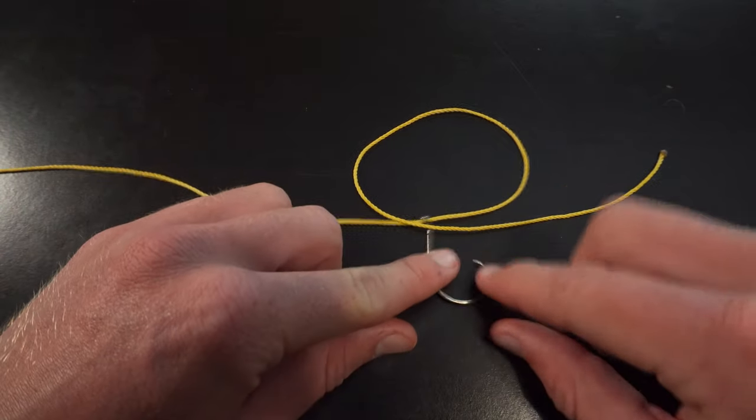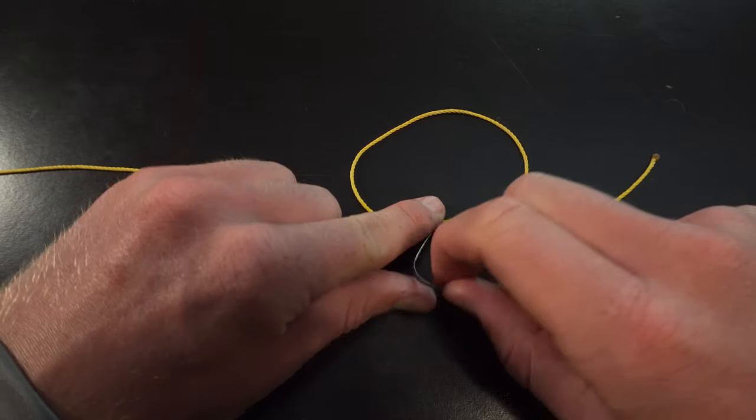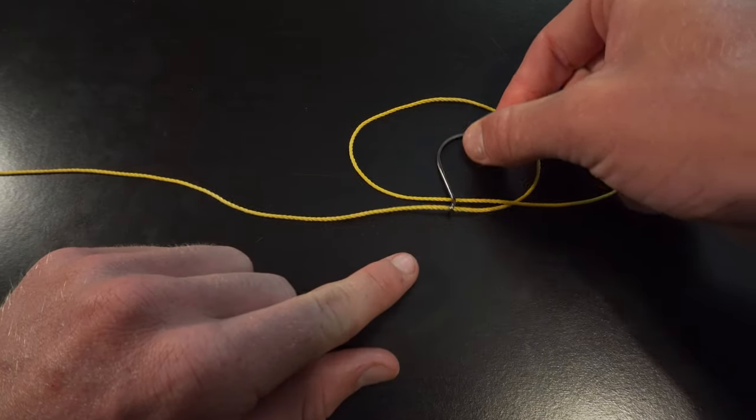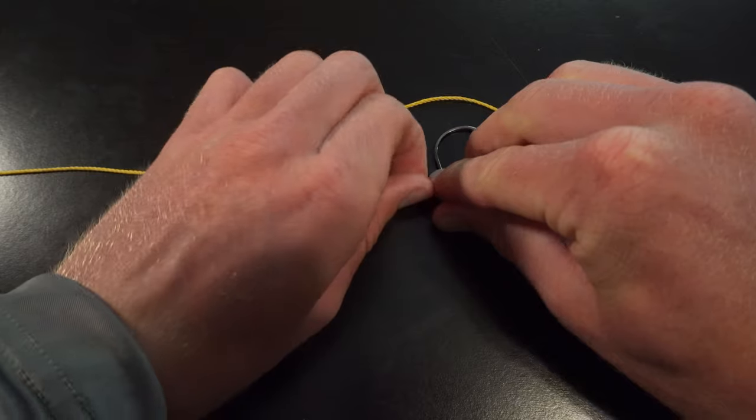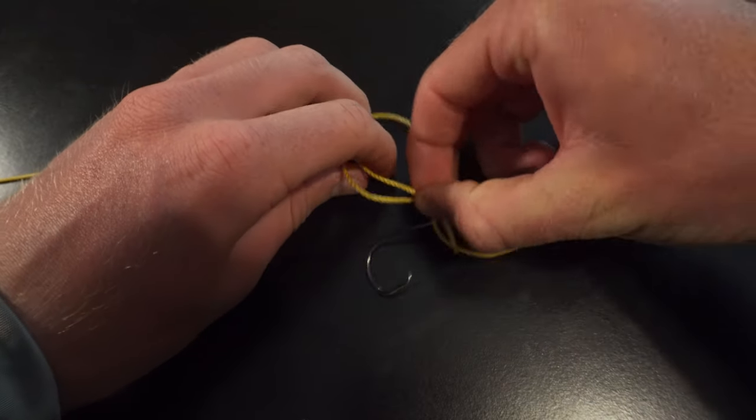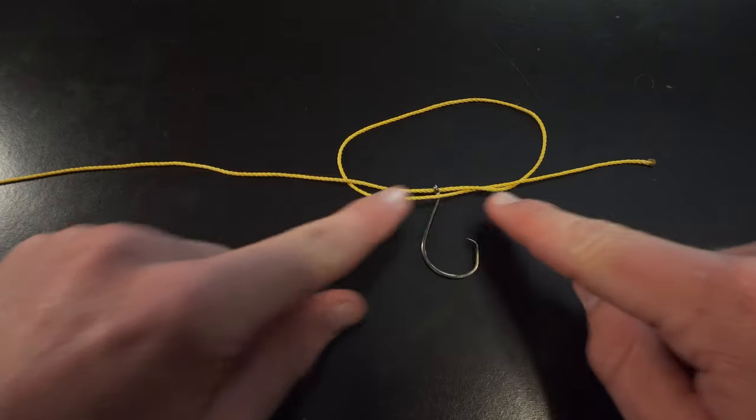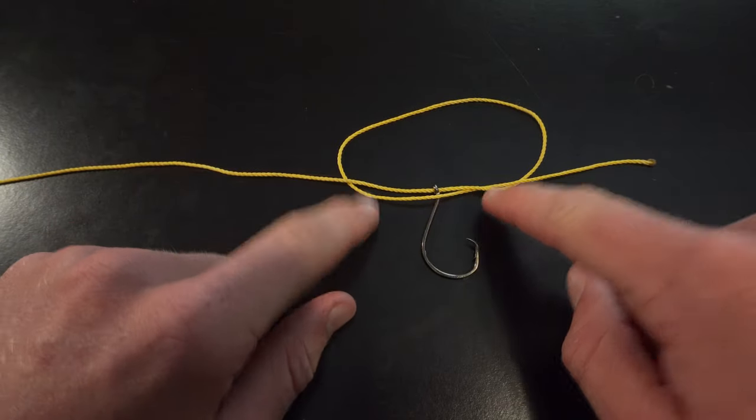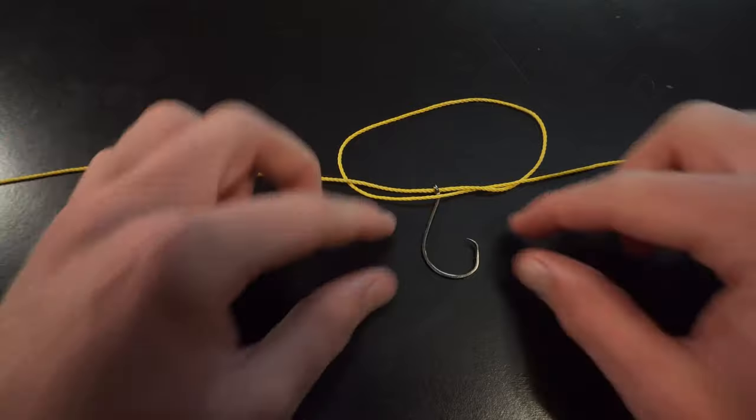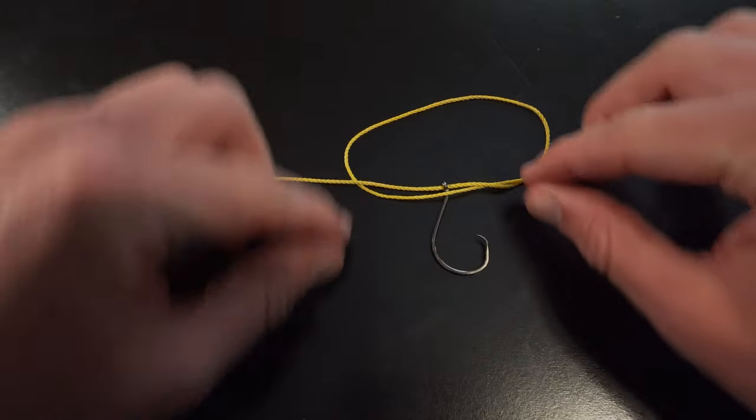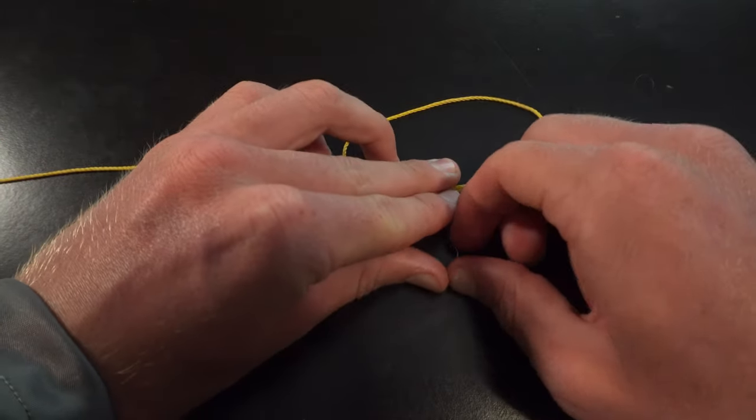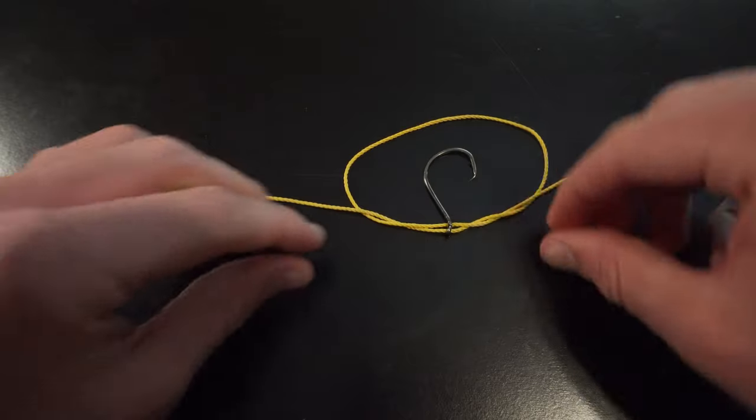Then we're going to take the actual hook and we're going to put it in the line and we're going to put it out the other way. So if you noticed it kind of looped that line a little bit. Well all you're going to do is do that five more times. So basically there will be 10 loops in total, five on each side. So you're going to just loop that over again.